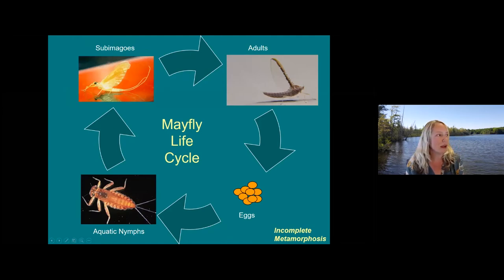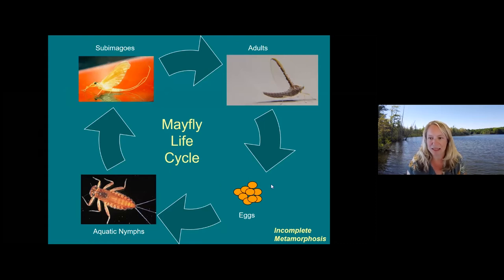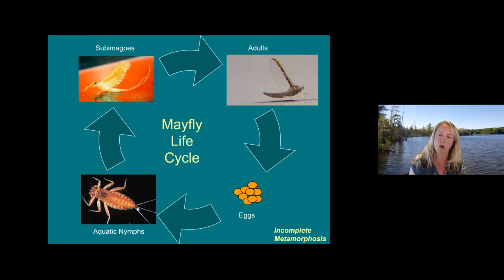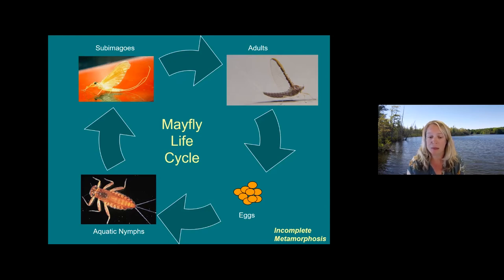The next thing I'll talk about is a slightly different life cycle, represented by the mayflies, which we see lots of around here on both our inland waters and on Lake Michigan. Here are your familiar terrestrial adults — the mayfly — again laying eggs on or near the stream surface. But they hatch into what we call a nymph, not a larva, because they don't go through a pupa stage — no cocoon like we see with the midges. They spend time as aquatic nymphs that actually look quite a bit like the adults, just without the wings.